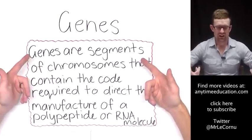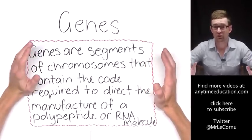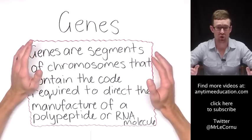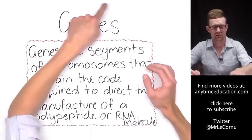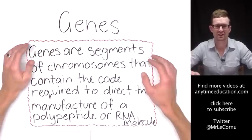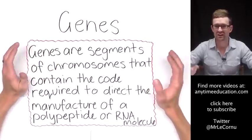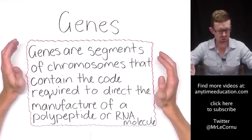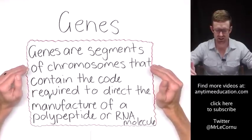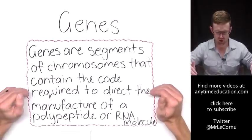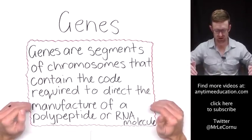To start with I'm going to recap genes. If you haven't already I recommend you go and watch the DNA chromosomes and genes video. In the video about genes we talked about the fact that genes are segments of chromosomes that contain the code required to direct the manufacture of a polypeptide or an RNA molecule.